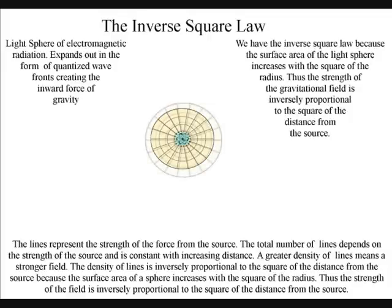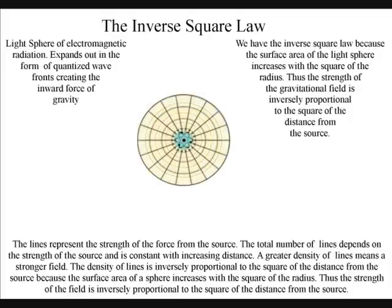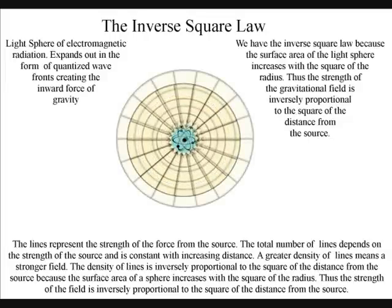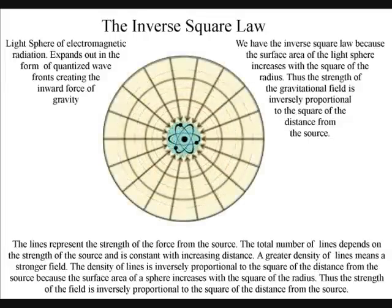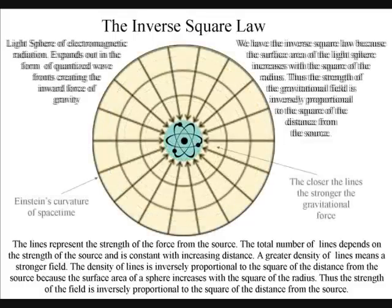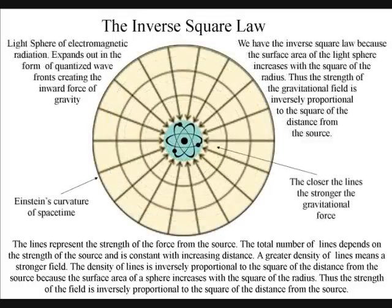We have the inverse square law, because the surface area of the light sphere increases with the square of the radius, thus the strength of the gravitational field is inversely proportional to the square of the distance from the source.